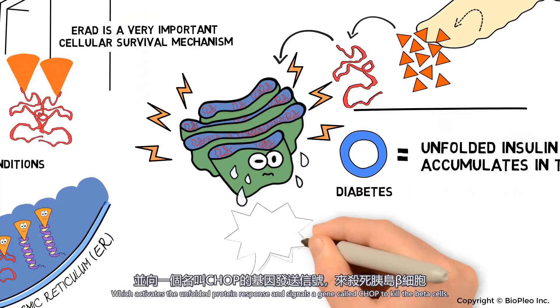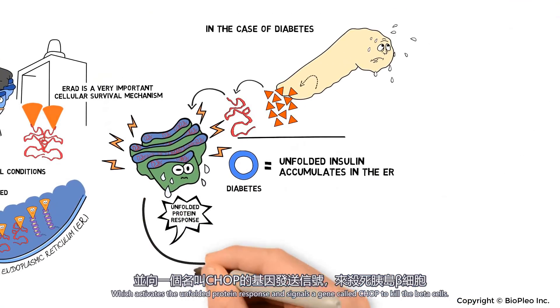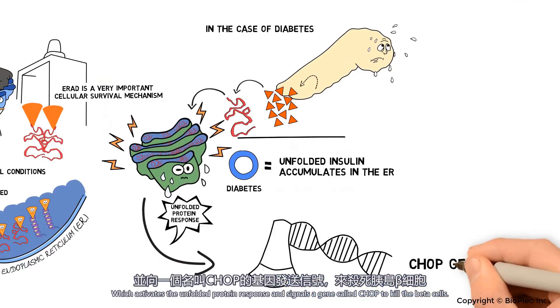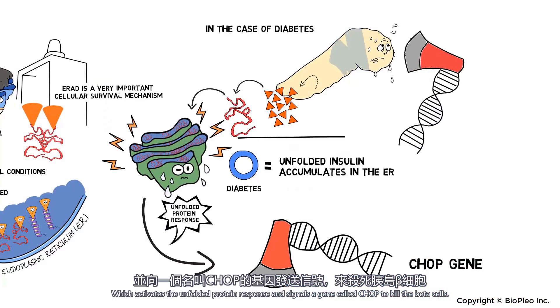Once this occurs, the stress level in the ER increases, which activates the unfolded protein response and signals a gene called CHOP to kill the beta cells.